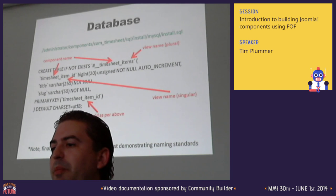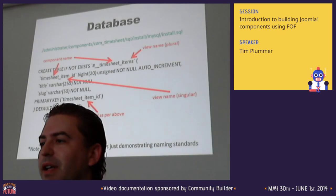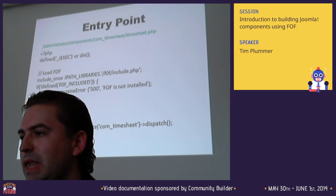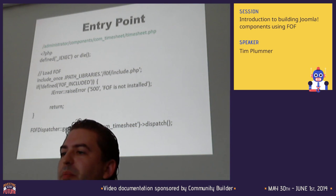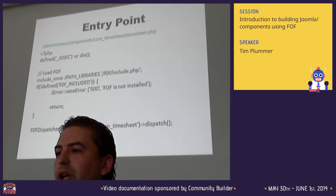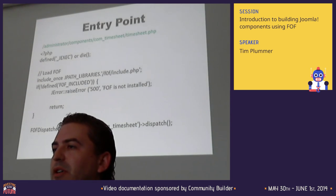The primary key is still that ID field. When the component loads up initially, there's an entry point file. For the back end, it's in administrator/components/[component name]/[component name].php - in this case timesheet.php. Essentially what this does is check to make sure that FOF is installed; if it is, it runs the dispatcher. The only thing you need to customise is the name of your component at the bottom - in this case, com_timesheet.